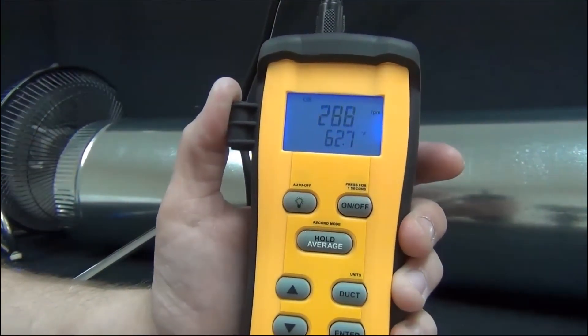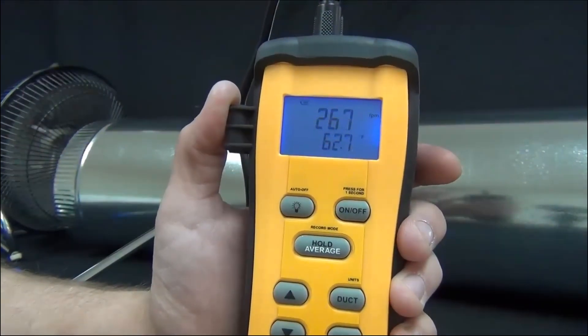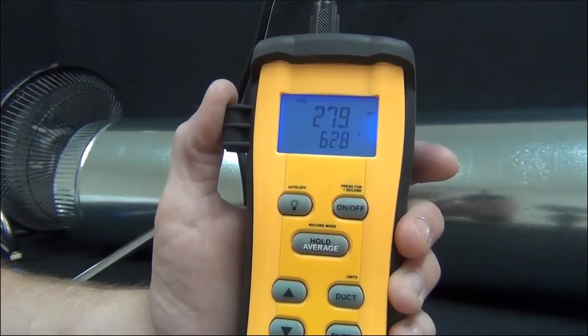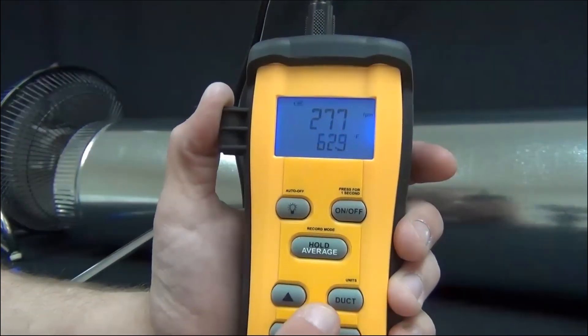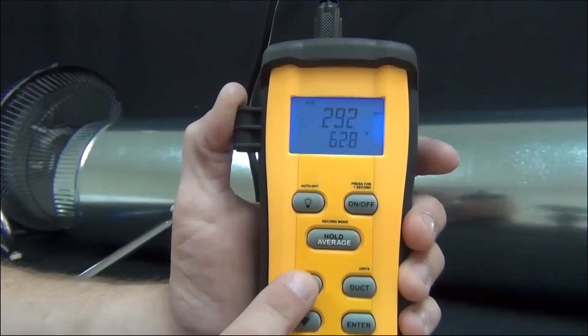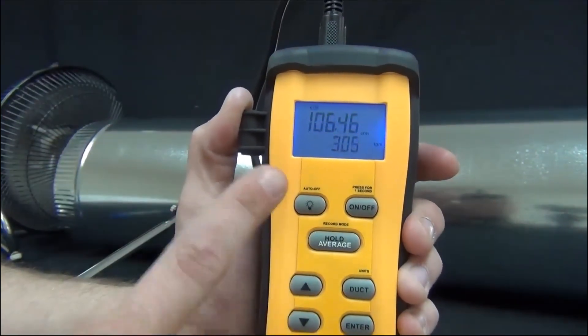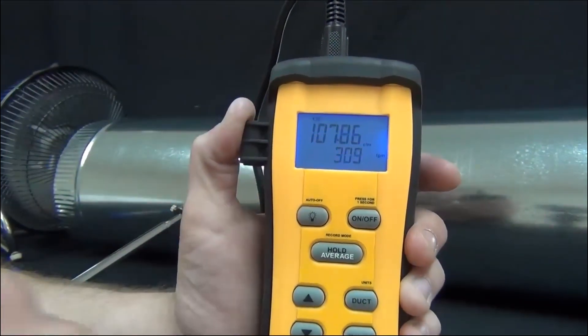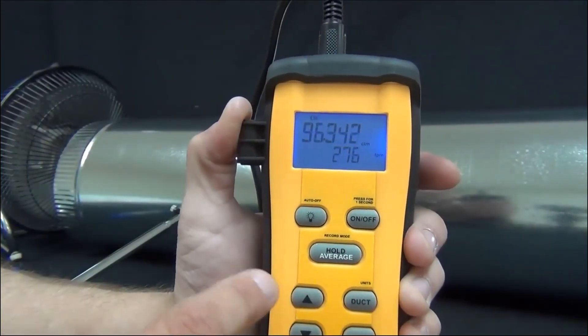Now it's back on the feet per minute. So the hot wire anemometer is reading about 270, 280 in there somewhere for the feet per minute. To change modes, while you're reading the feet per minute, just press the up arrow. And now I'm reading 108 CFM based on the eight inch diameter duct that I entered in.